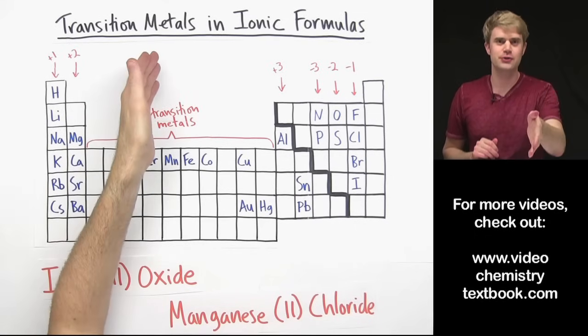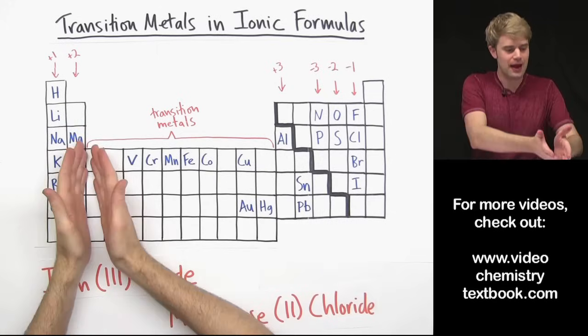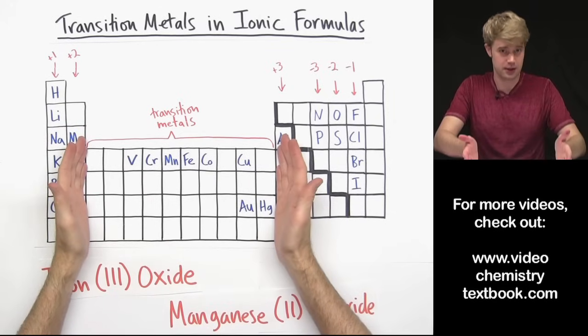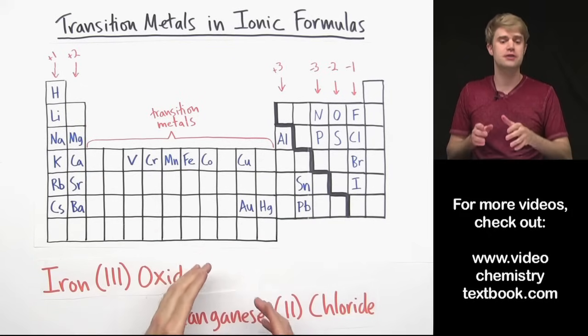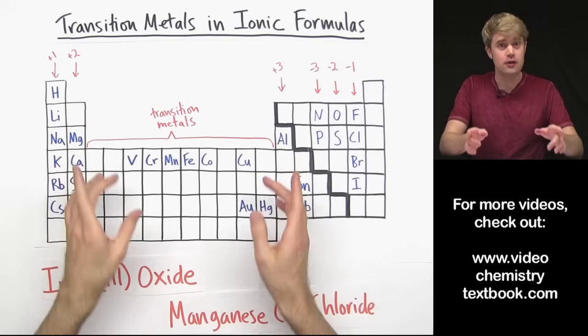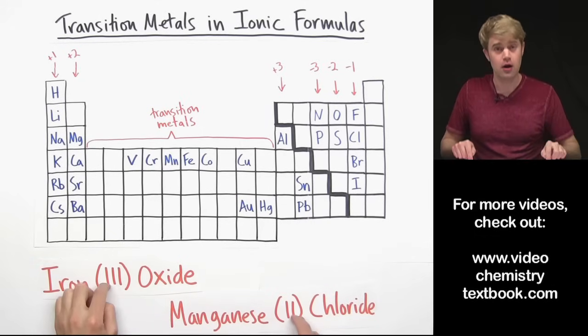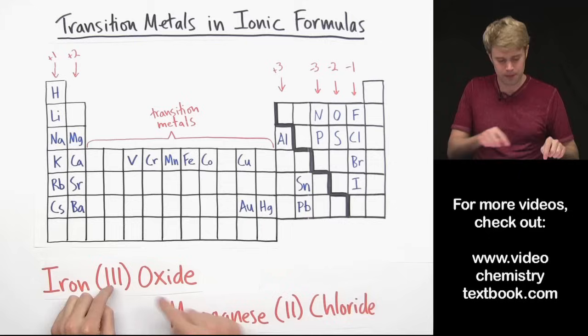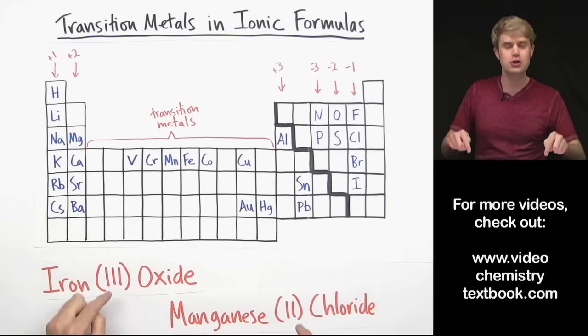Let's talk about transition metals in ionic formulas. The transition metals are the elements in this part of the periodic table here. And when we write formulas for ionic compounds that contain transition metals, the formulas look like this with these Roman numerals here in the middle. This might be a little bit different from other types of chemical formulas you've seen. So in this video, we'll talk about what's going on here.